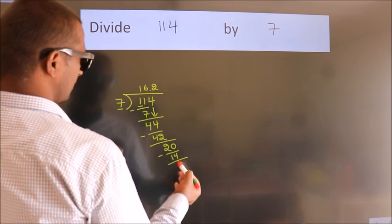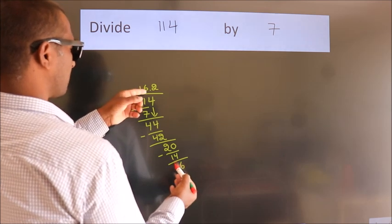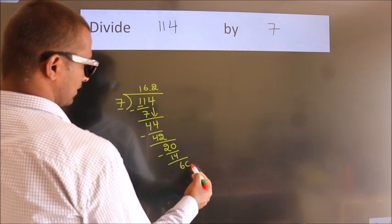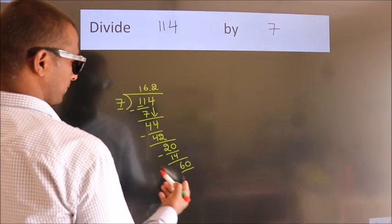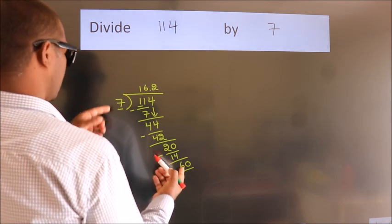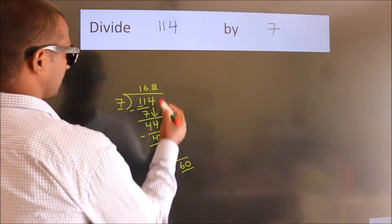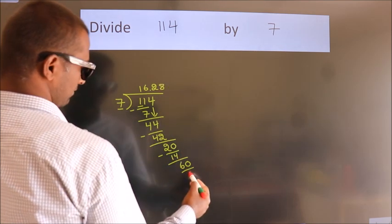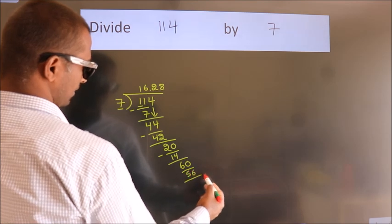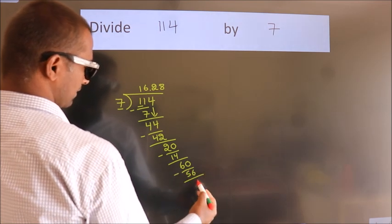After this, we already have the decimal, so directly take 0. So 60. A number close to 60 in the 7 table is 7 times 8, which is 56. Now we subtract and get 4.